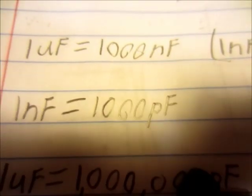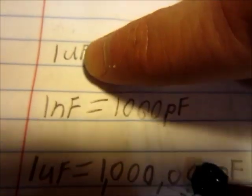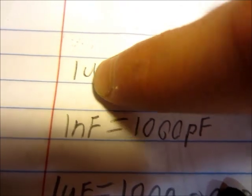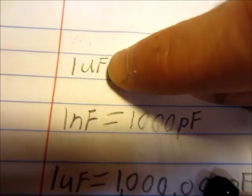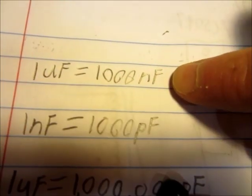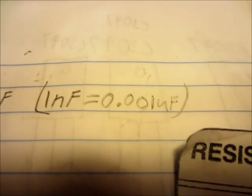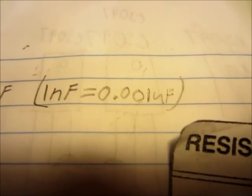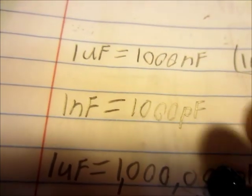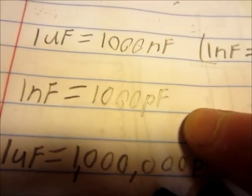Capacitance is measured in farads. 1 microfarad, the unit is uF, equals 1,000 nanofarads. You can also say 1 nanofarad equals that many microfarads.